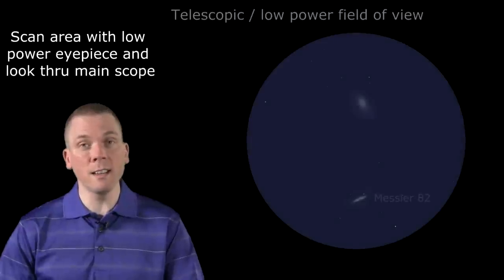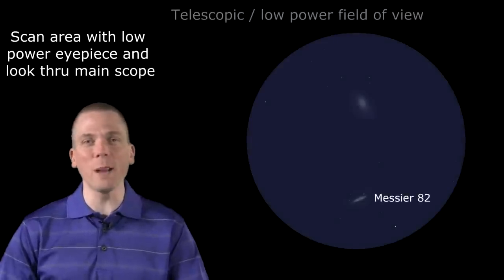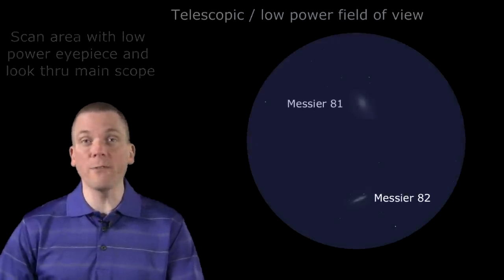M82 will look thin and narrow, like a faint cigar shape, and M81 will be a faint oval.